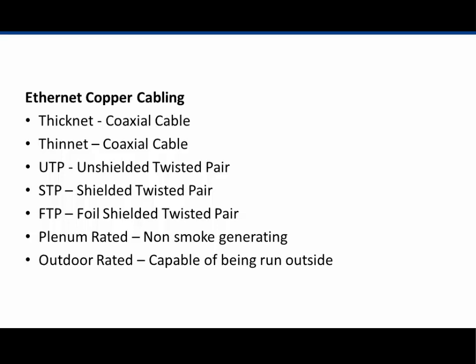A more manageable and inexpensive solution was unshielded twisted pair, or UTP. Unshielded twisted pair uses twists in the wire pairs to create a cancellation effect, which protects against crosstalk and magnetic interference.